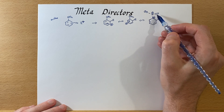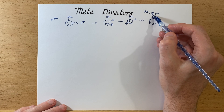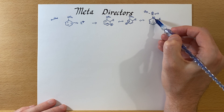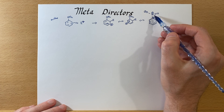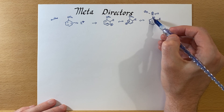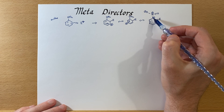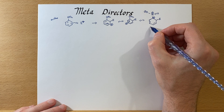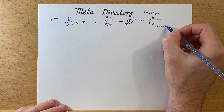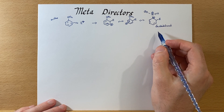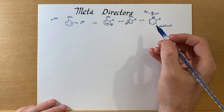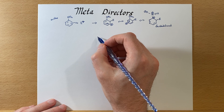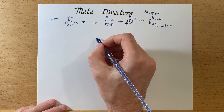This is an electron withdrawing group, and if we put formal charges on it you'll notice that the nitrogen has a positive formal charge. Now we have a resonance structure that puts a partial positive charge on the carbon right next to this electron withdrawing nitrogen. This is not stable — it will actually be destabilized by the electron withdrawing group, especially this structure. That's why we don't see much ortho substitution with a nitro group, which is a meta director.